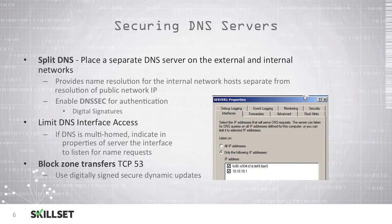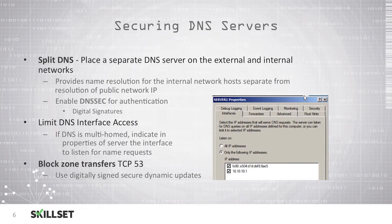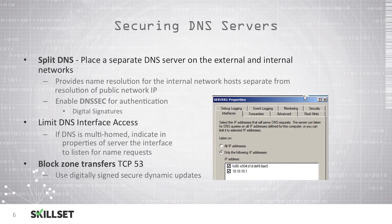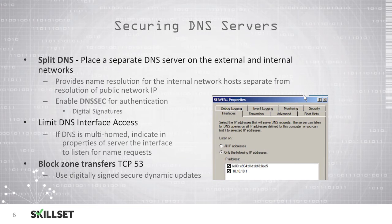You should also enable DNSSEC for security and authentication, which uses digital signatures to ensure that you are communicating with the proper DNS server. You should remember for the CISSP examination that DNSSEC is a way to secure domain name service. You should also limit your DNS interface access. If DNS is multi-homed, you should indicate in the properties of the server the interface to listen for name requests. You should also block zone transfers, which use TCP port 53, and use digitally signed, secure dynamic updates to ensure that no one tampers with your DNS servers.